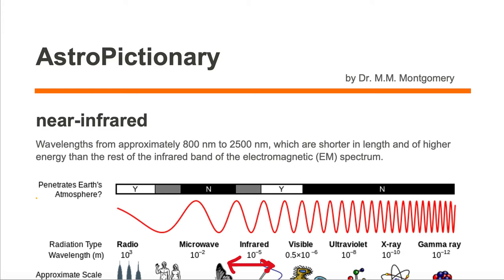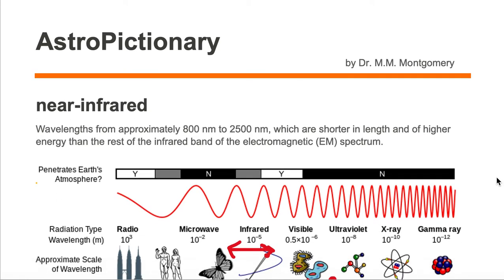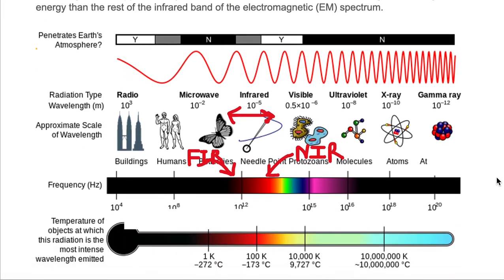Near infrared are wavelengths from approximately 800 nanometers to 2500 nanometers, which are shorter in length and of higher energy than the rest of the infrared band of the electromagnetic spectrum. Let's take a look at the electromagnetic spectrum.